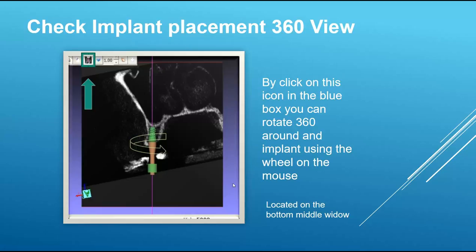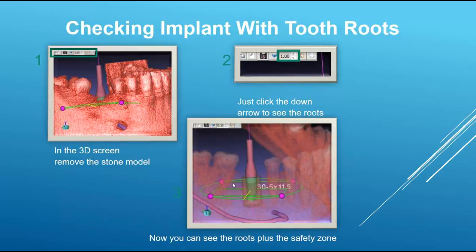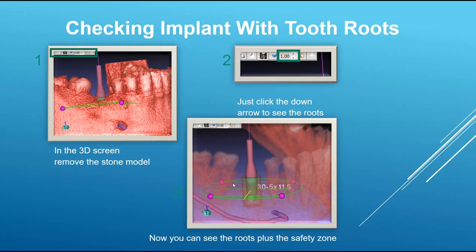You can also check the distance of the implant to the nerve and to the roots, which is useful when the CT has a little bit of scatter. On the bottom right-hand side screen there's a smaller icon with a 1 millimeter measurement and two arrows pointing up and down. By scrolling down, it will make the 3D image of the jaw translucent so you can see the roots more clearly and see where the nerve is located.